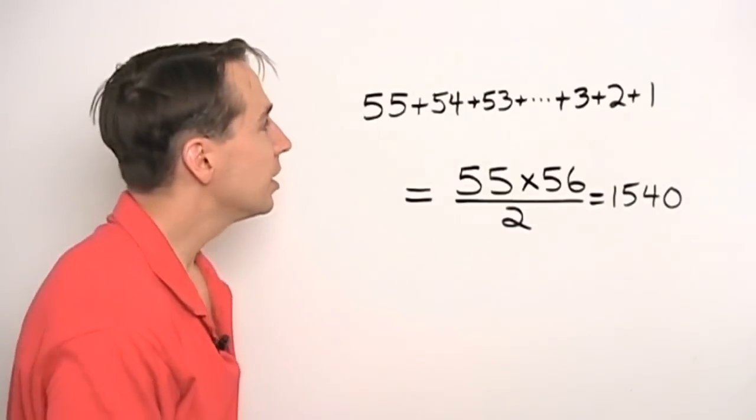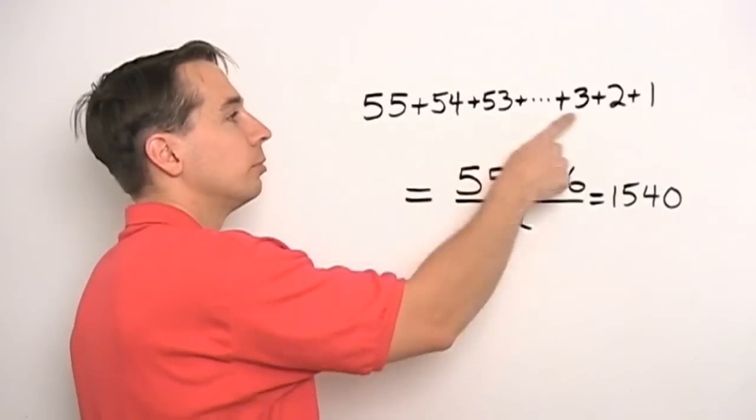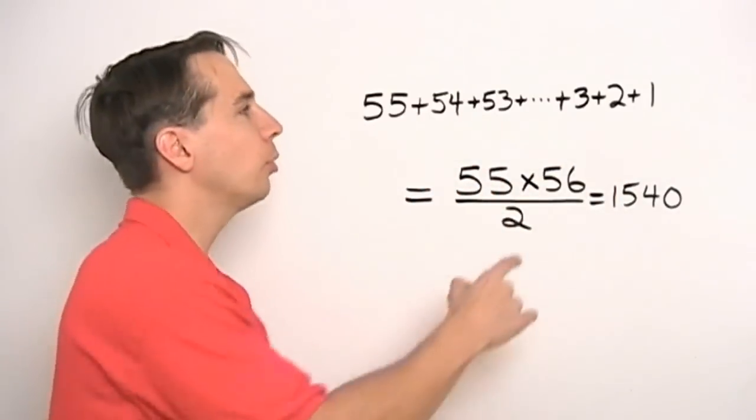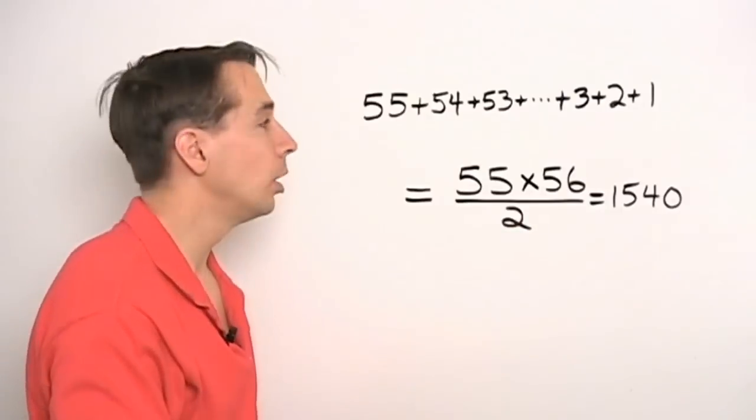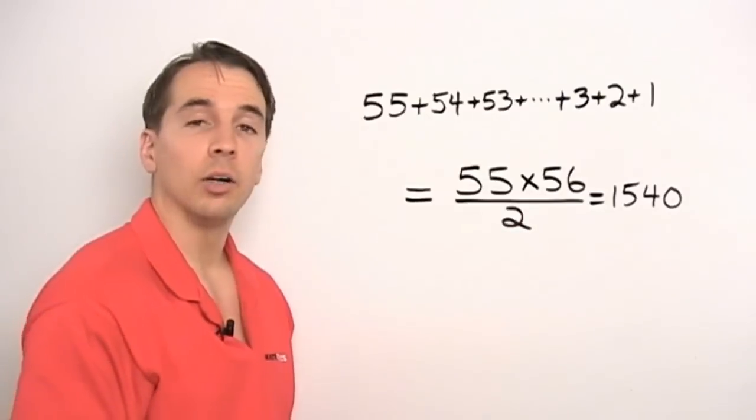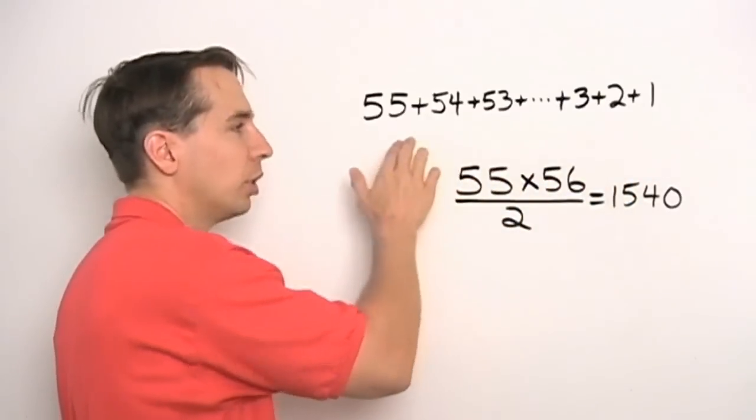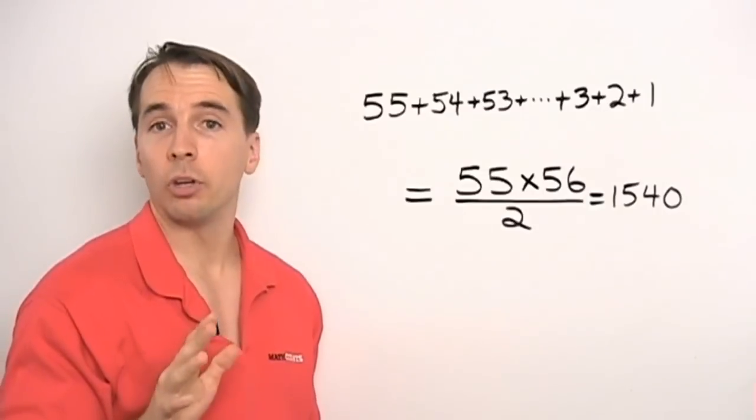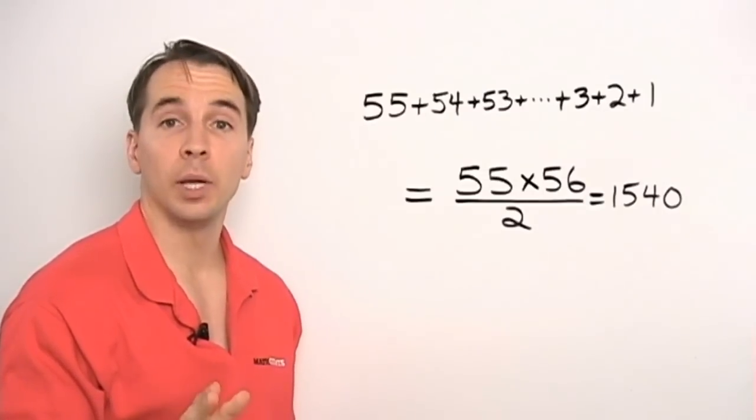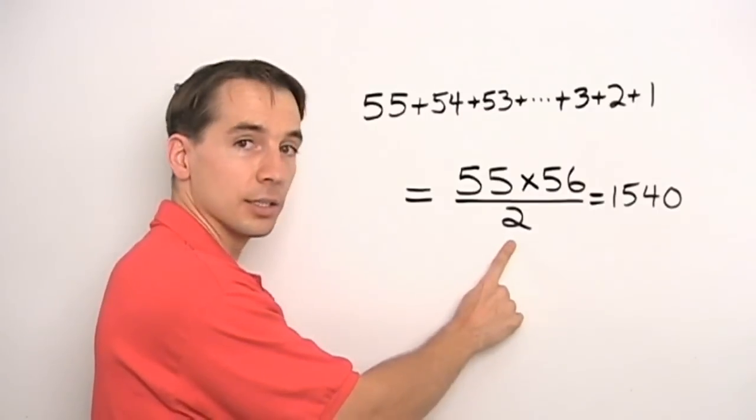And second, this happens a lot in counting problems. You're trying to count something, and you come up with one plus two plus three plus four, and so on, up to some number of whatever you're trying to count. And whenever you see this in a counting problem, whenever you come up with this, one plus two plus three plus four, there's almost always another faster way to do the problem. And it almost always will look a lot like this.